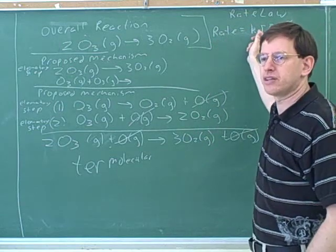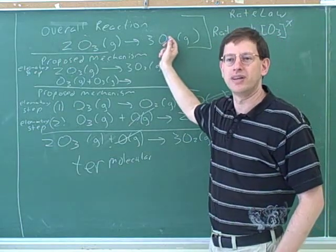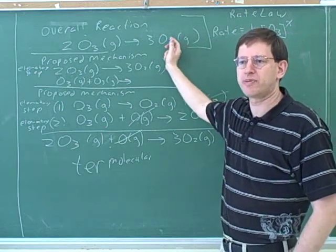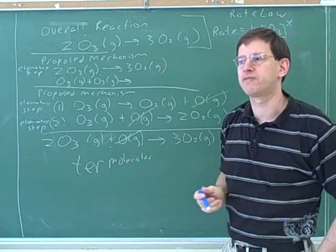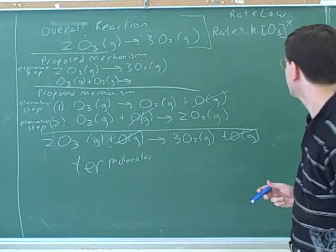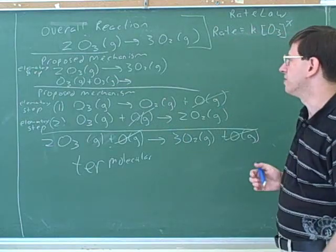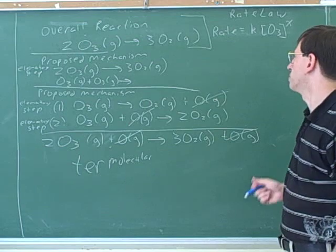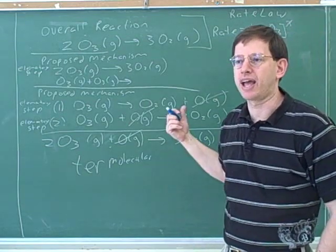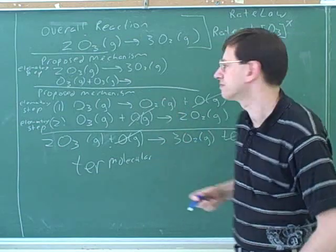That is the main thing covered in Friday's videos — how to figure out the exponent from experimental data. The tables always give initial rates because you're just focusing on the forward reaction. You can see the rate law only has O3 in it and no O2 — that's why we only put starting materials and no product: we're focusing on the forward reaction and not on the reverse reaction.